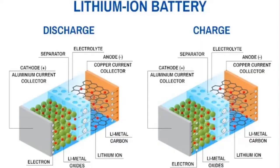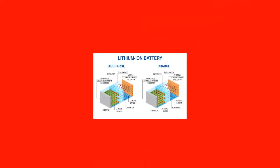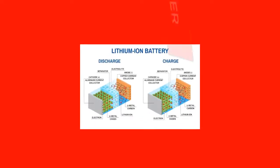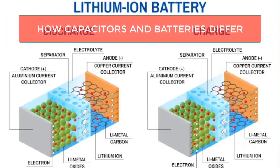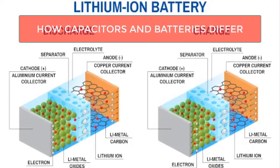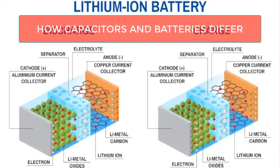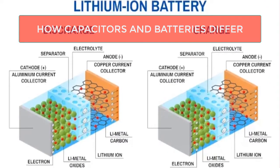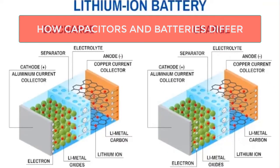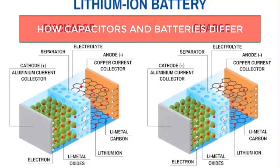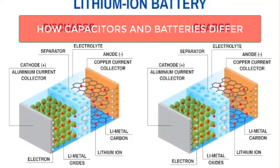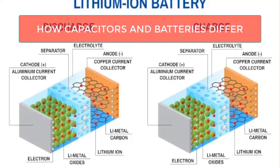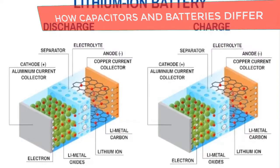How capacitors and batteries differ: capacitors and batteries are similar in the sense that they can both store electrical power and then release it when needed. The big difference is that capacitors store power as an electrostatic field, while batteries use a chemical reaction to store and later release power.